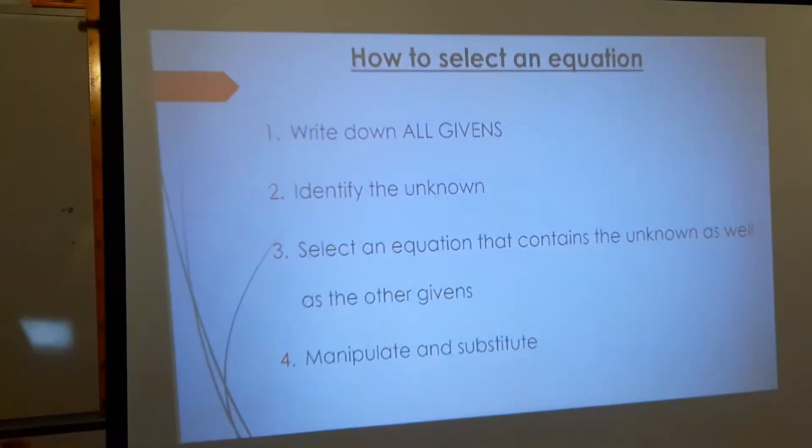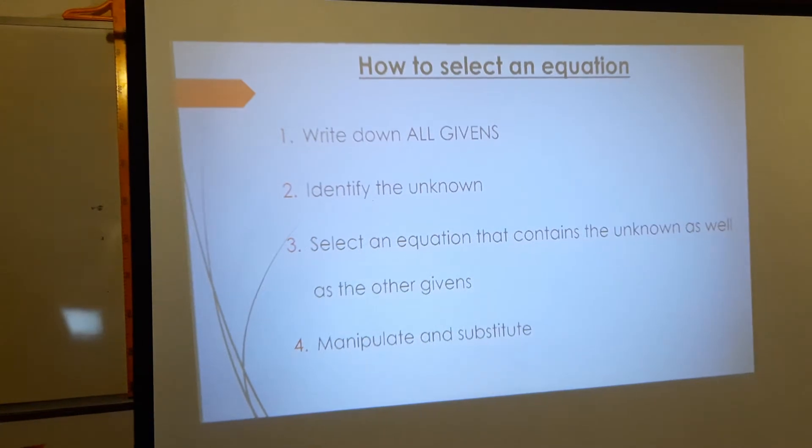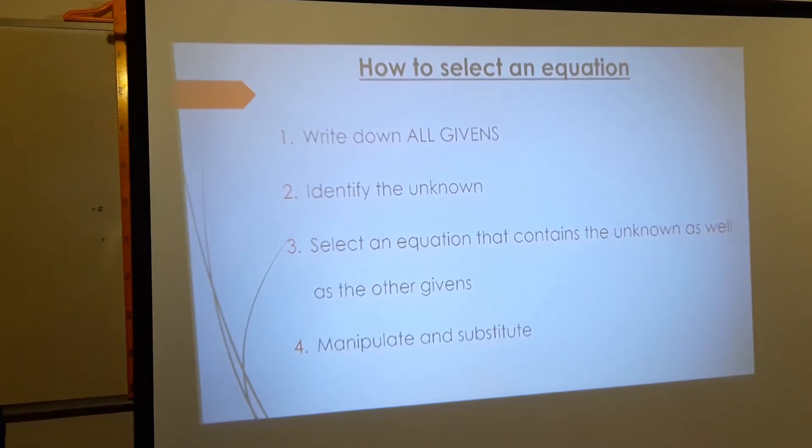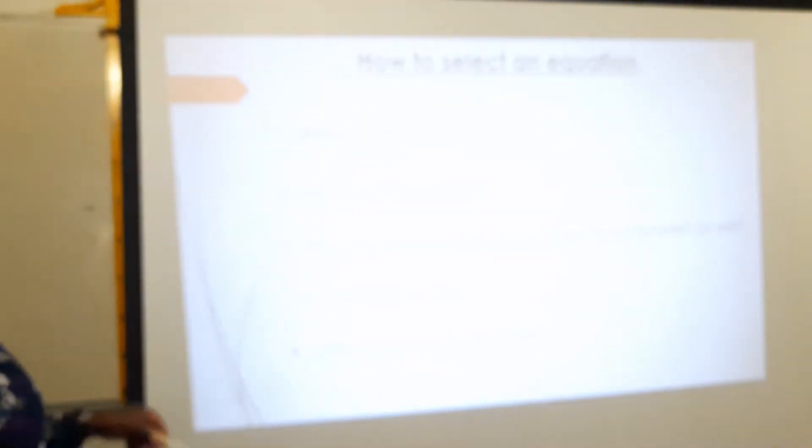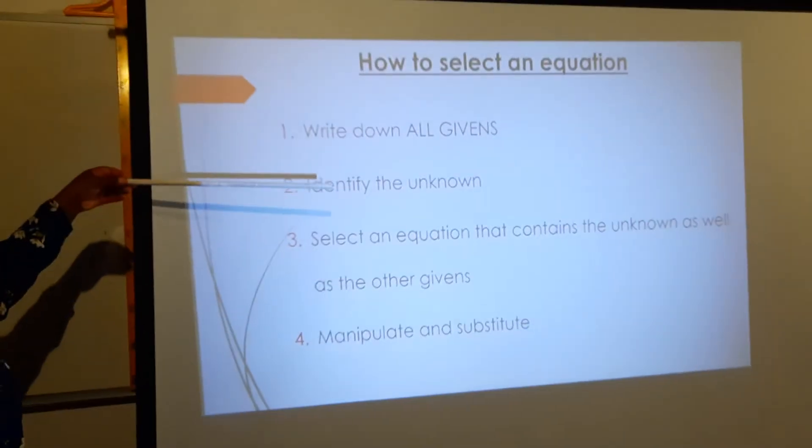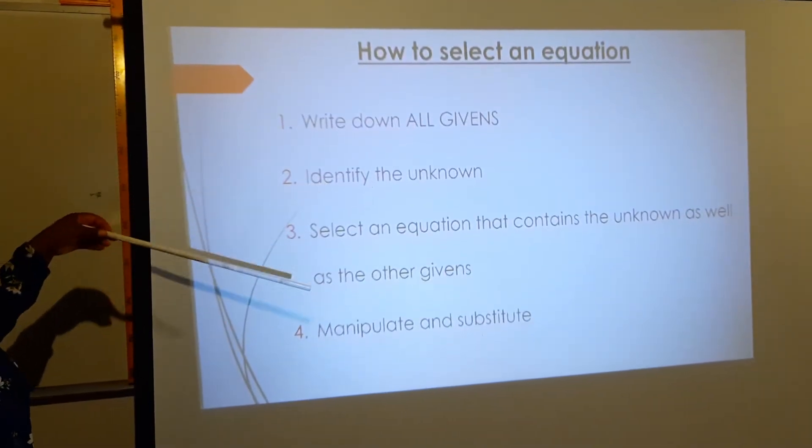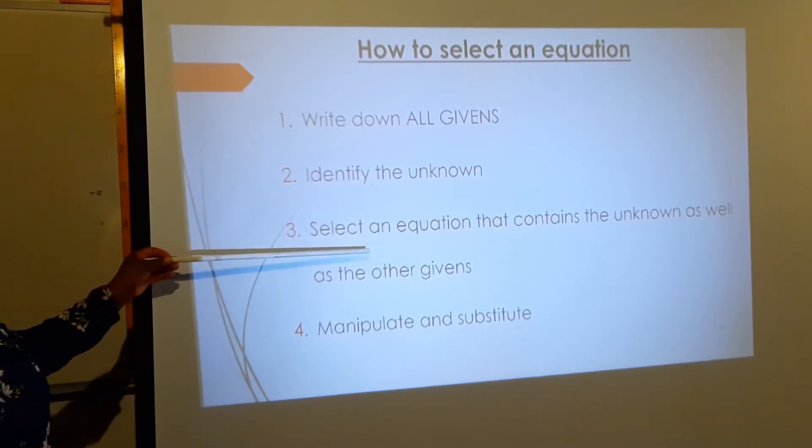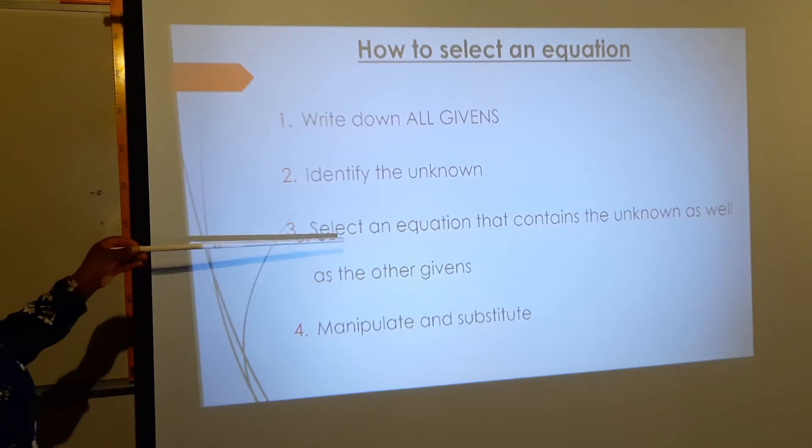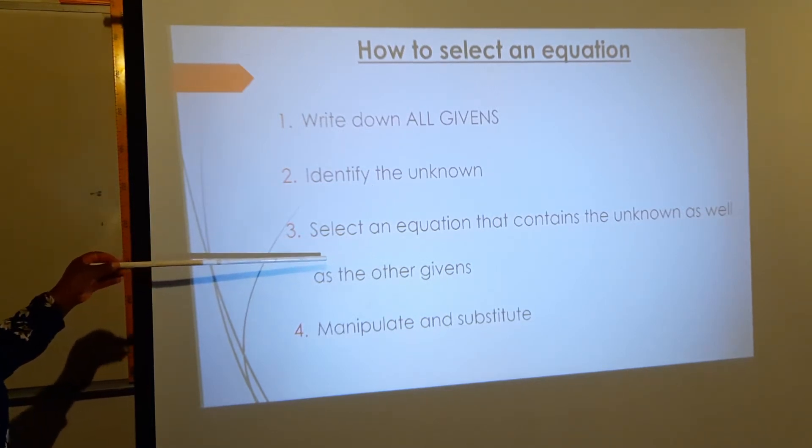You have to write down all the given information. Once you have written that down, you need to identify the unknown - what is it that you must calculate? Then you need to select an appropriate equation. The equation must contain the unknown and it must also accommodate the other given information.